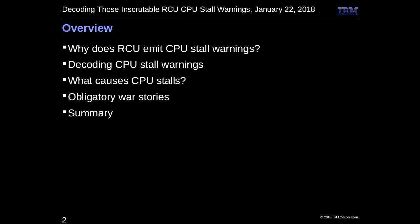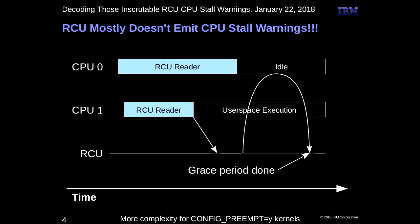We're going to go through a few topics here. First thing is that in the common case, RCU actually doesn't emit CPU stall warnings. This is a simplified situation with preemption disabled. Normally, you have a couple CPUs acting as RCU readers for a little while. At some point it notices that CPU 0 is idle and CPU 1 is in user space. Therefore it says great, they've both gone through a quiescent state, grace period's over. Done. On to the next one.